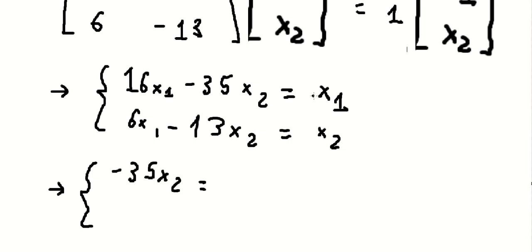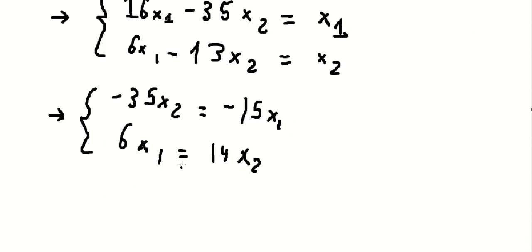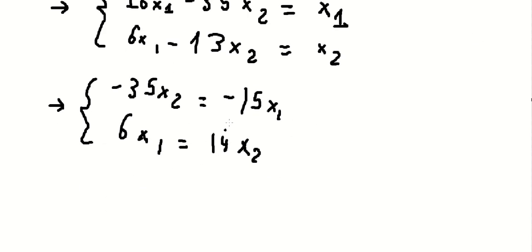So negative 16 plus one, we have negative 15. This one go in here, we have 6 x1 equals to 14 x2. So if we divide by negative 15 and number 6 in here, we have like this.